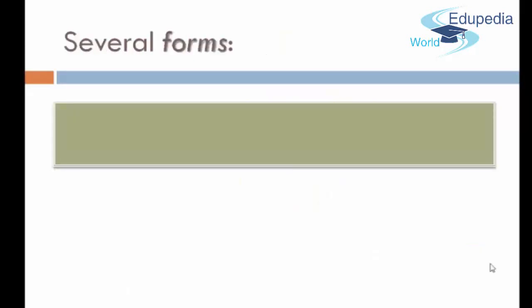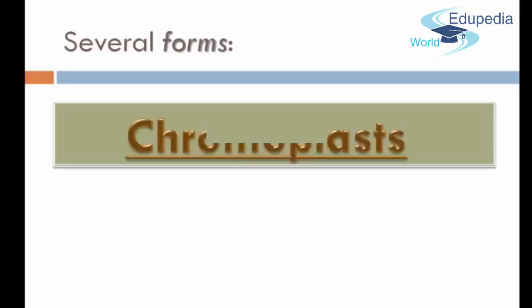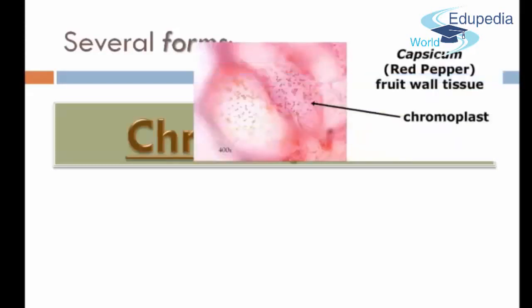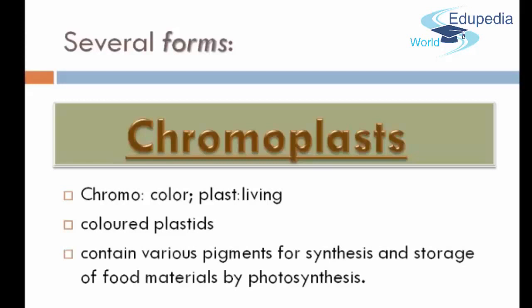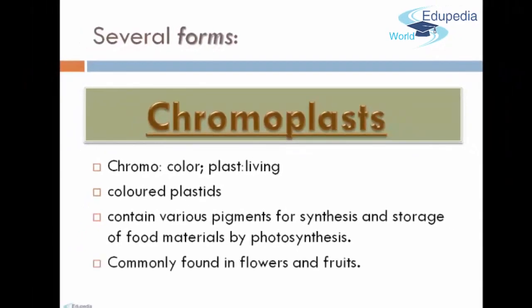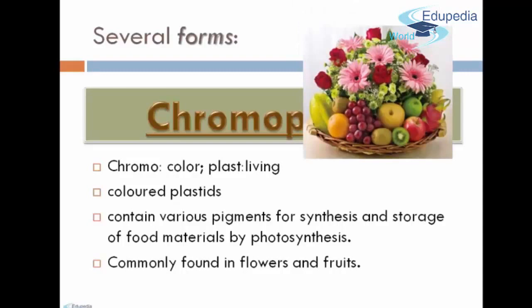Plastids have several forms. The first form is Chromoplasts. Chromoplasts is from the word Chromo, which means color, and Plast, which means living, meaning Chromoplasts is a colored plastids. It contains various pigments for synthesis and storage of food materials by photosynthesis, and is commonly found in flowers and fruits.